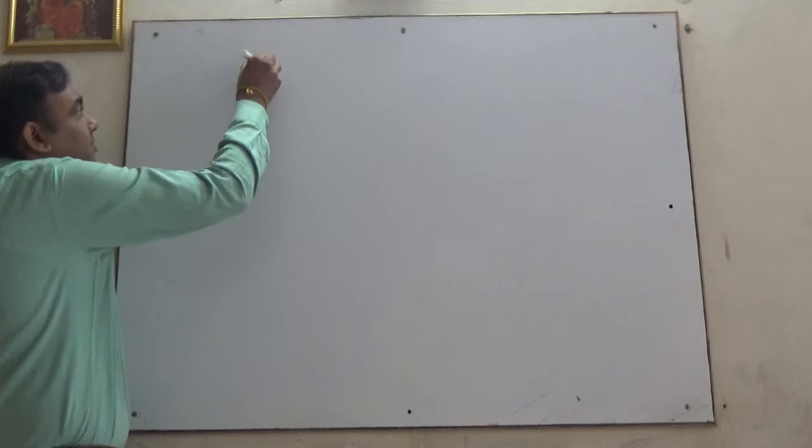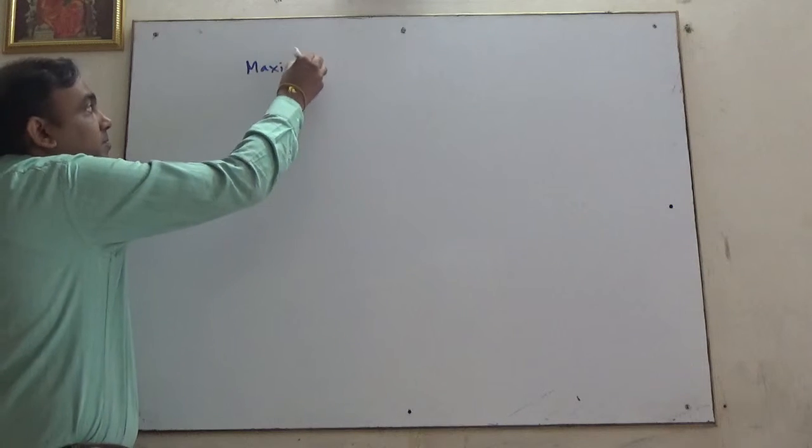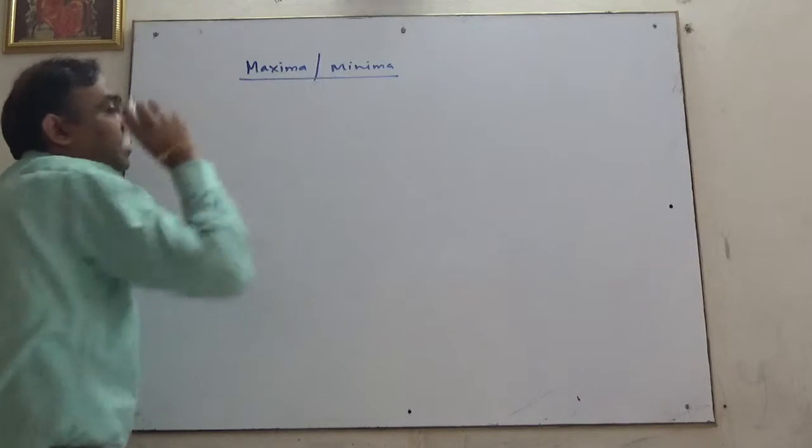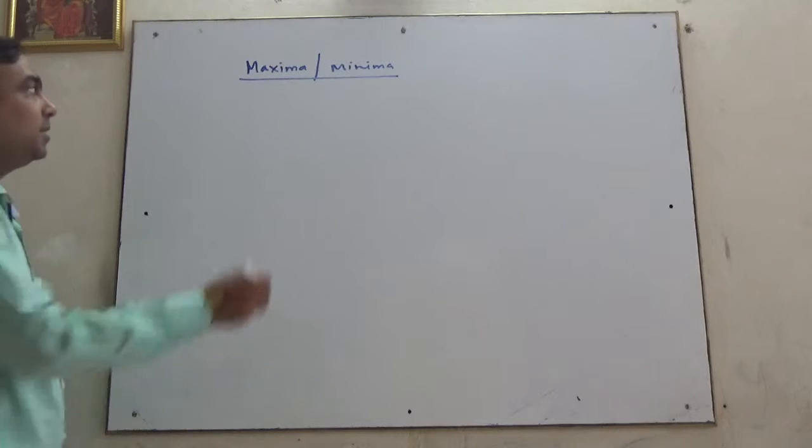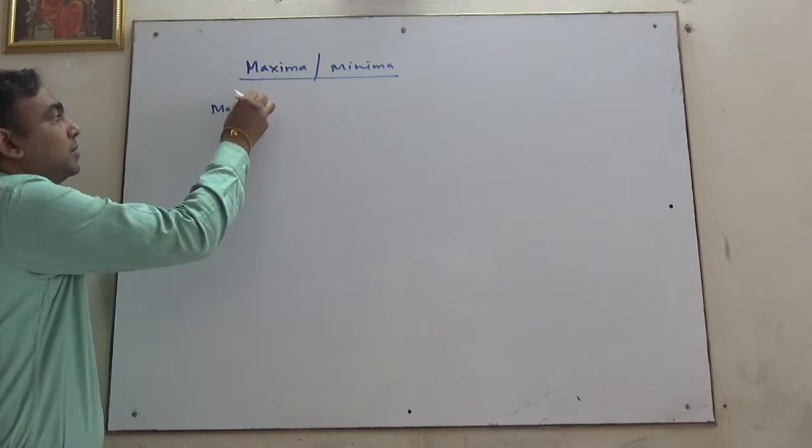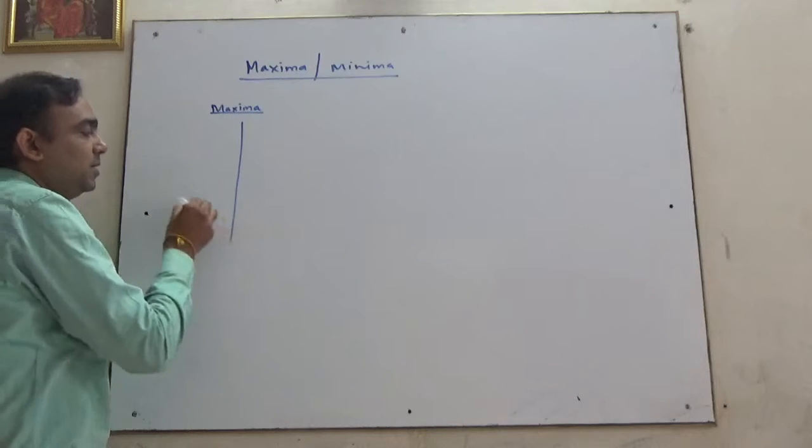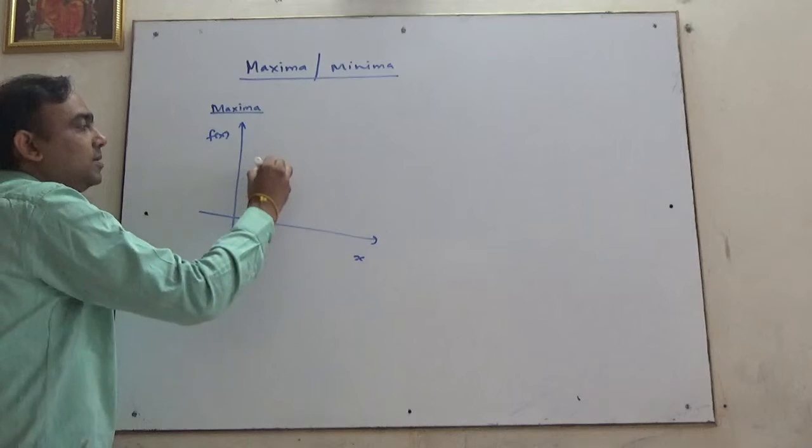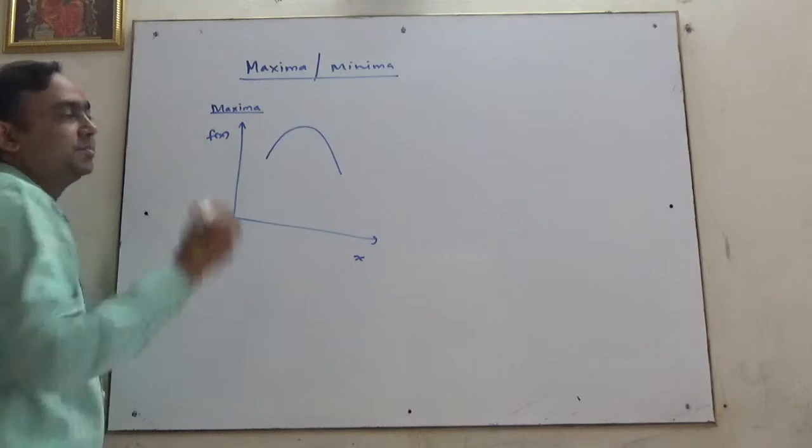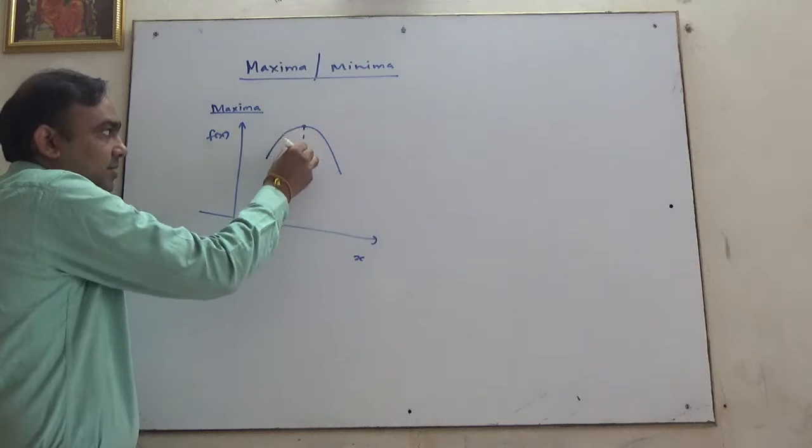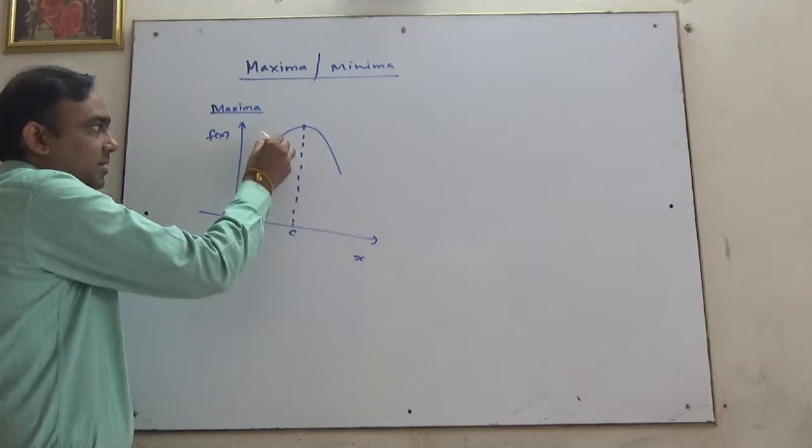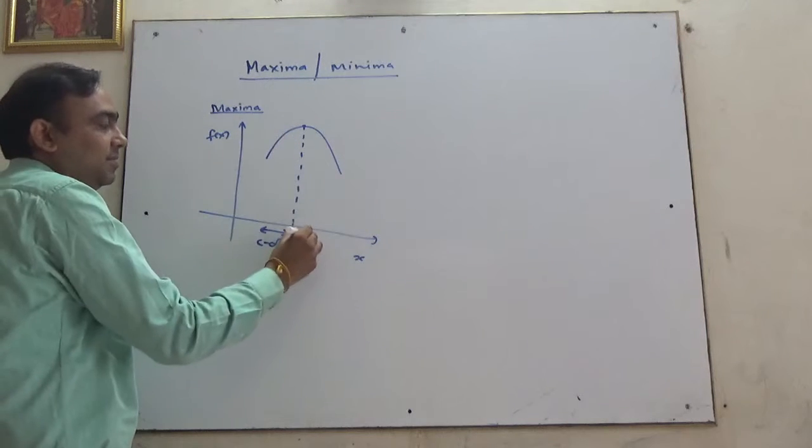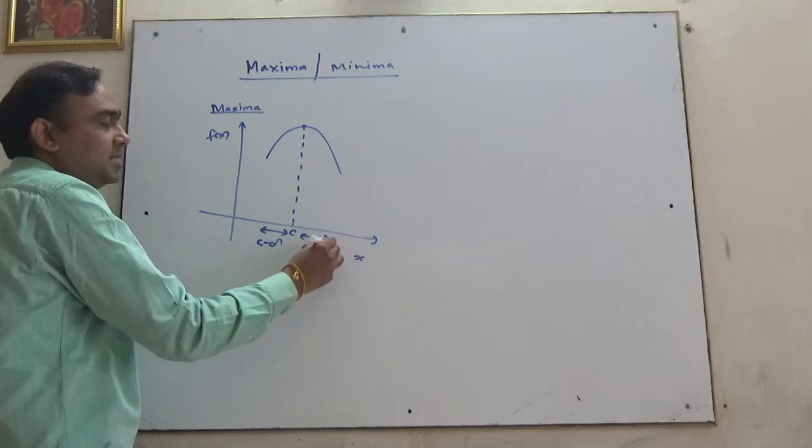Next topic, let's look at maxima and minima. First, we'll look at maxima. Consider a function f(x) and an interval at a point c. Here is the interval c minus delta, and here is the interval c plus delta, suppose.